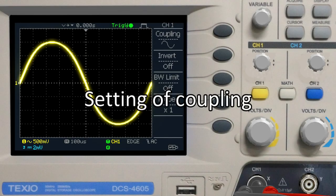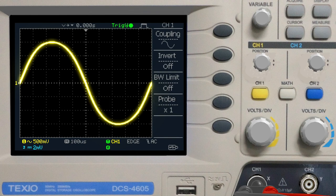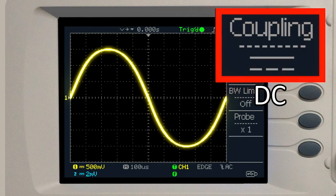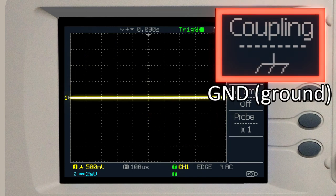Next, let's look at coupling setting. The coupling settings can be made separately for channel 1 and channel 2. To change the coupling for channel 1, press the button for channel 1. This symbol is for AC. This for DC. And this for ground.